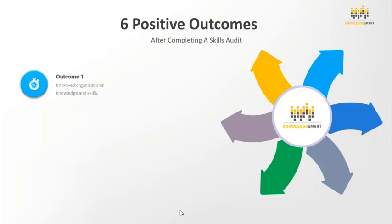Outcome one: improved organizational knowledge and skills. As technologies and business models continue their rapid evolution, companies are experiencing a step change in the workforce skills they need to thrive and grow. As tasks become more automated and companies redesign jobs, it will be critical to enact strategies that help employees develop new capabilities. The KnowledgeSmart platform allows you to be strategic in how you close skill gaps.